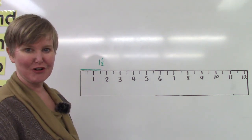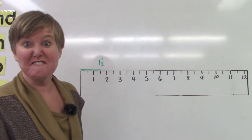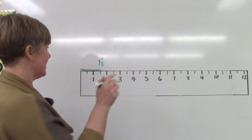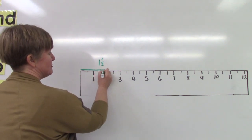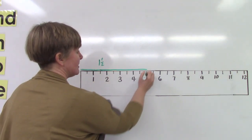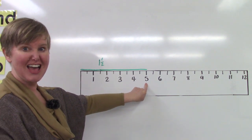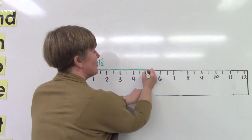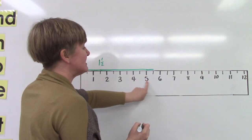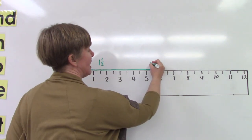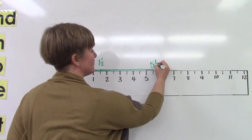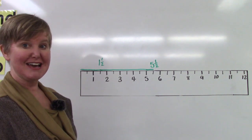I could go even further and maybe do five and a half inches. That means my line would have to keep going all the way to number five and then keep going to the half. It's halfway between the five and the six. That's five and one half.